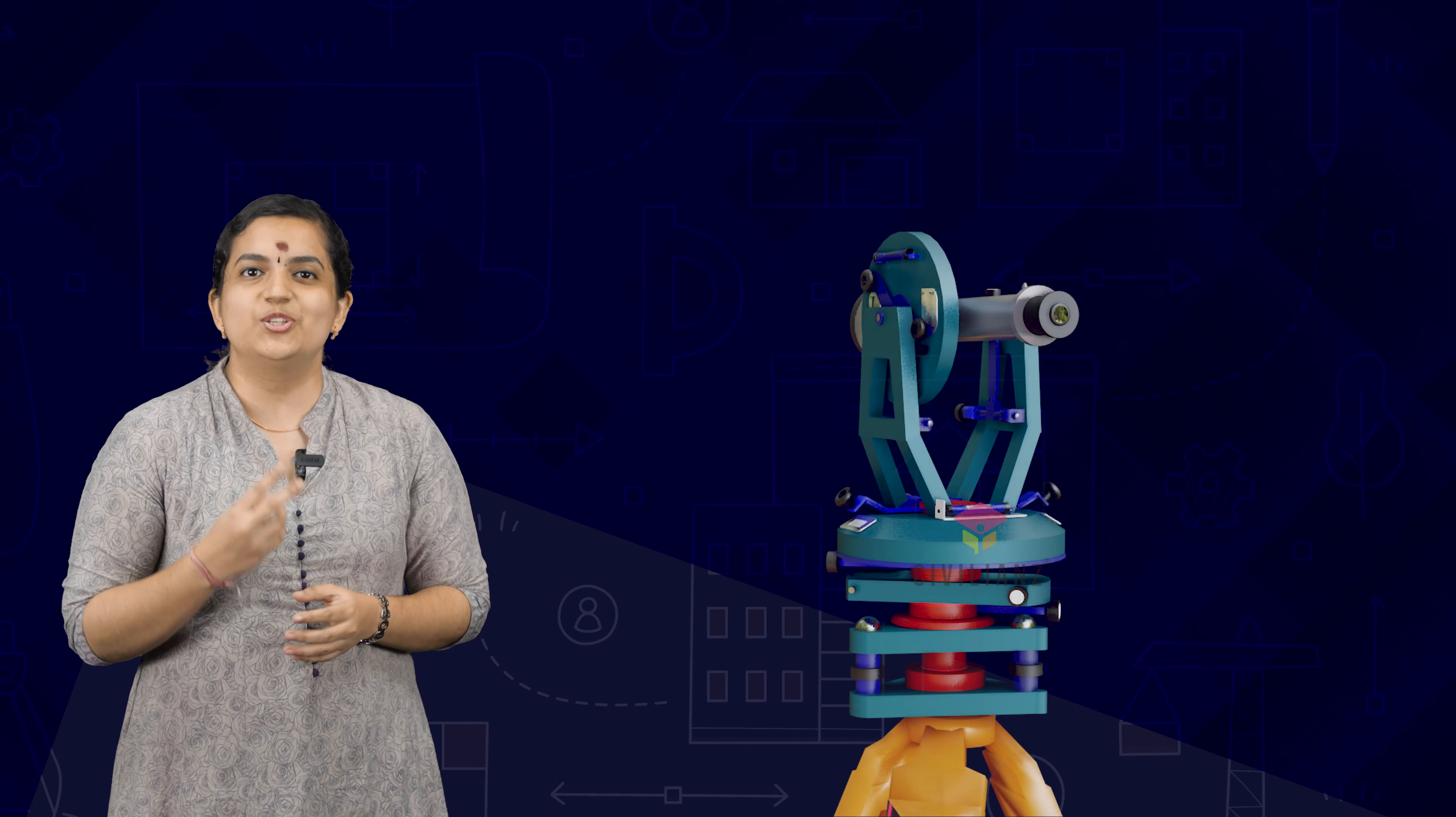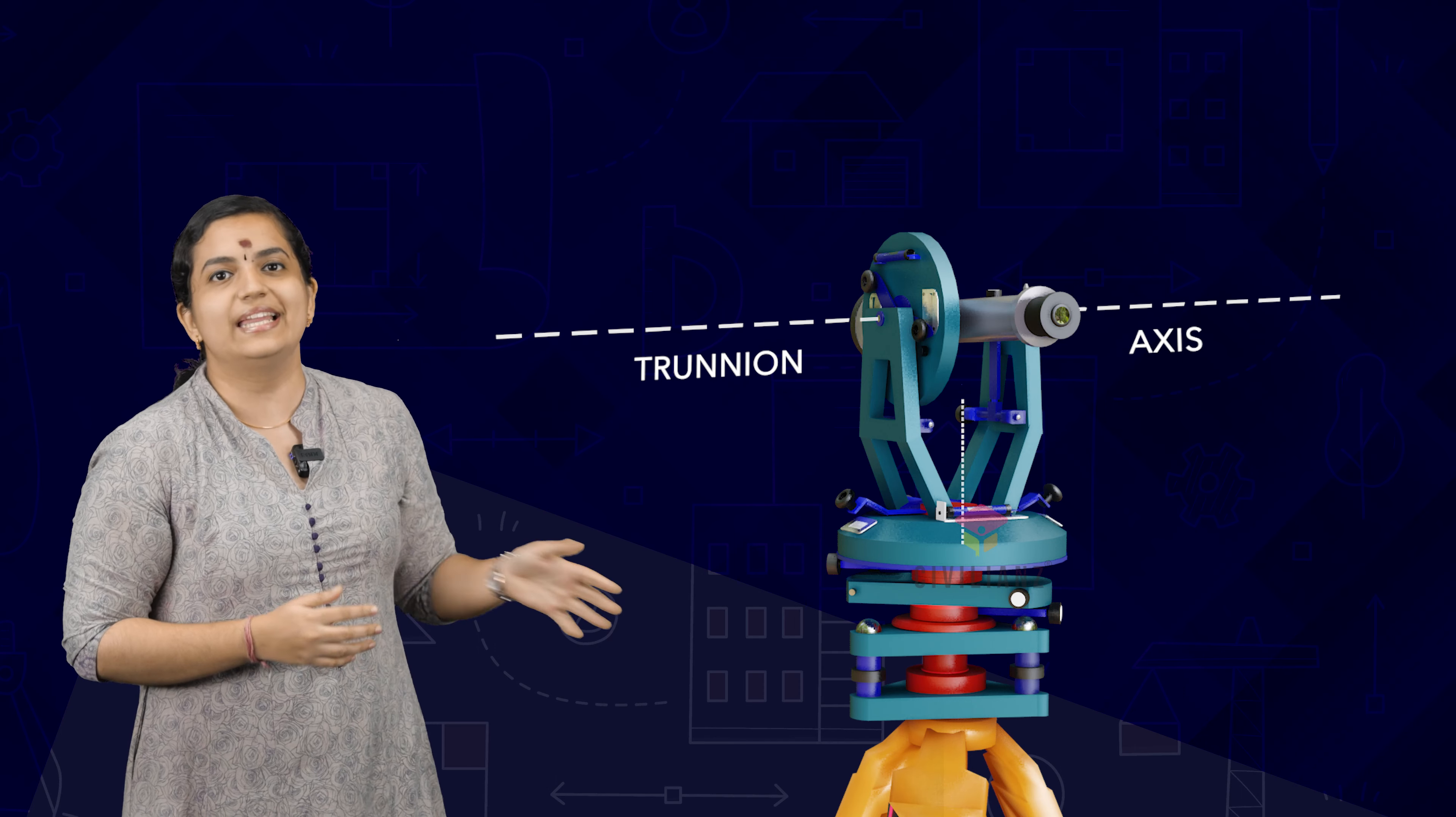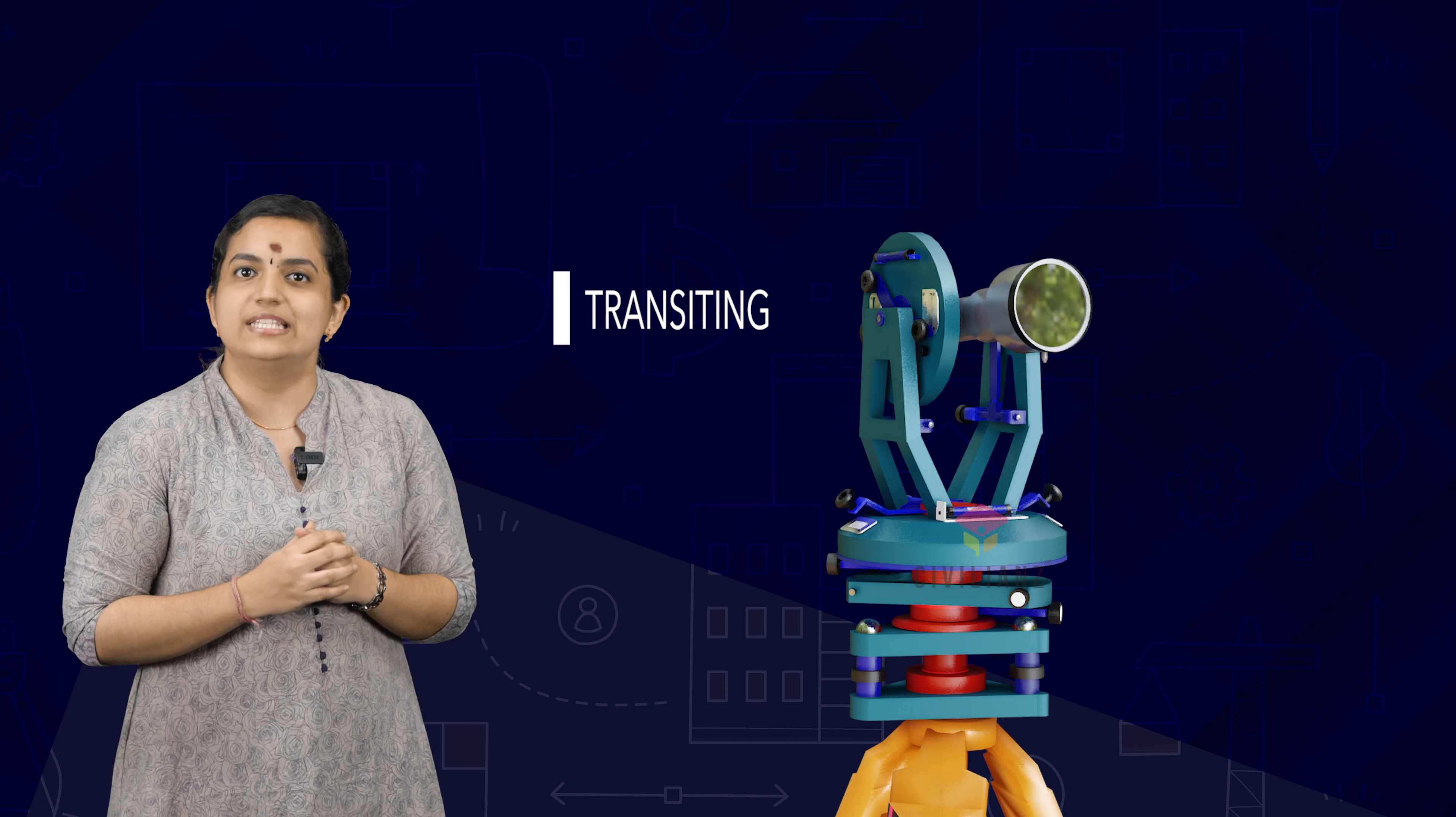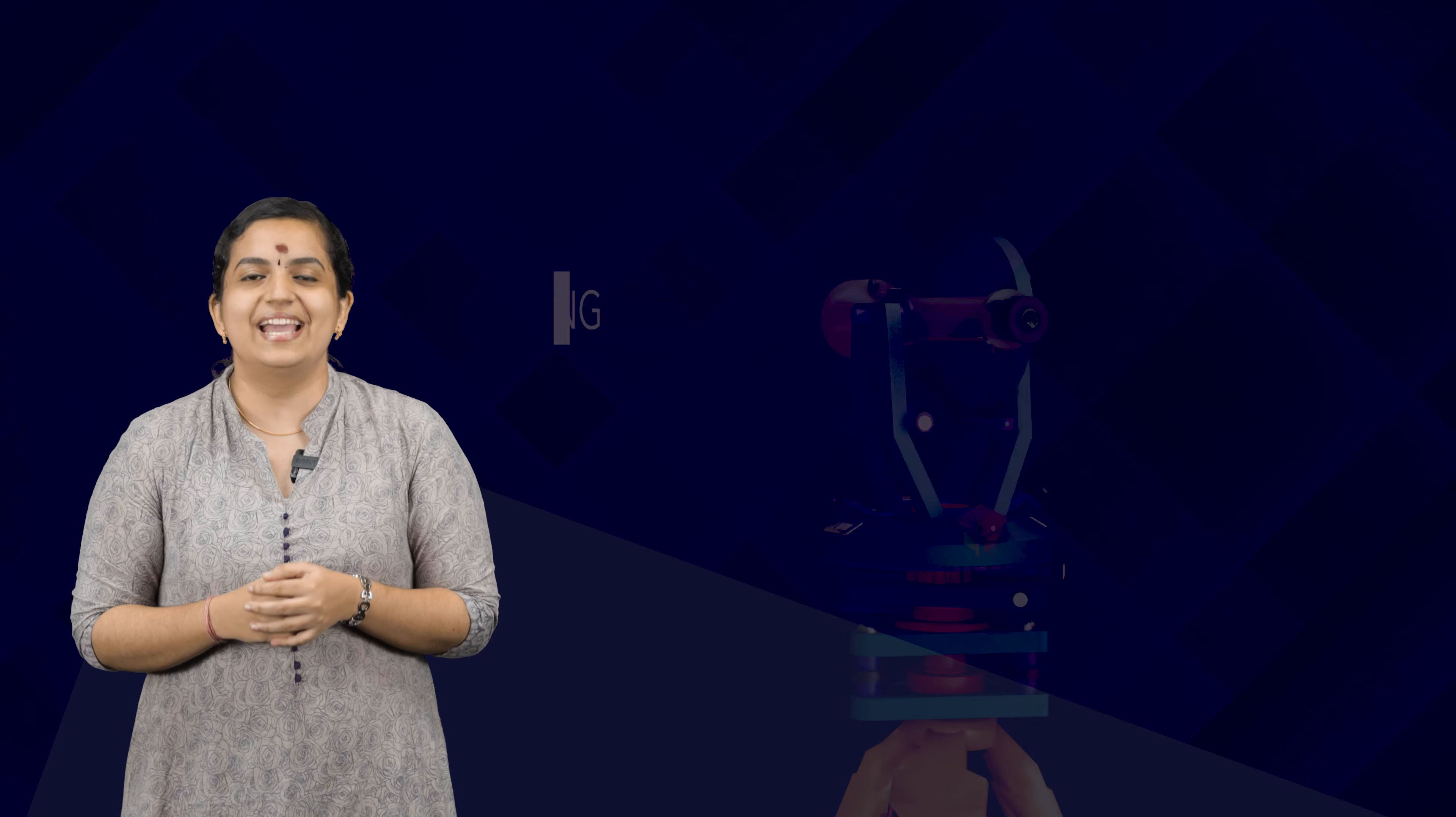Now we are going to learn two basic operations in a theodolite. You can see a horizontal axis as well as the vertical axis of the theodolite here. The process of turning or revolving the telescope through 180 degrees in vertical plane with respect to the horizontal axis is called transiting, and the process of turning the telescope in horizontal plane with respect to the vertical axis is called swinging.